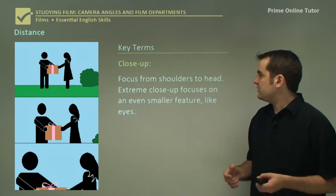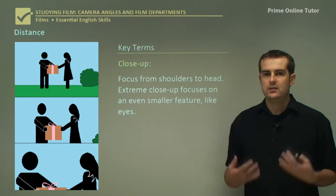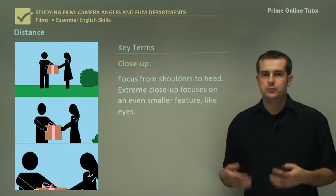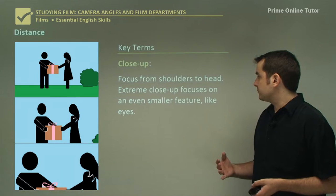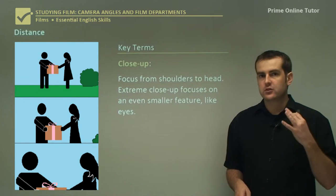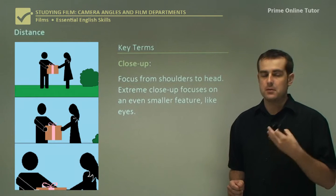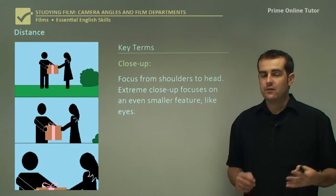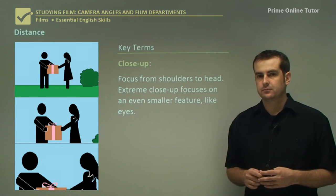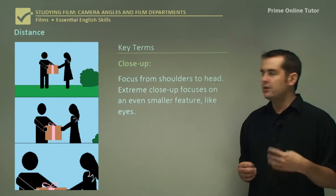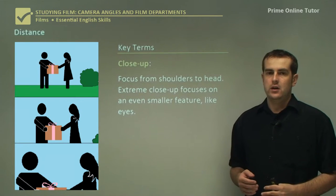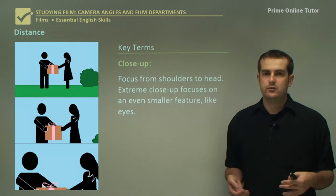A close up basically focuses from the shoulders to the head, and helps to show reaction a little bit more. An extreme close up goes even more detailed — for example focusing straight on an eye or a mouth, something which is meaningful to show in a really close up kind of way. So basically, the shots are either long, medium or close, and then you give a respective name to them.